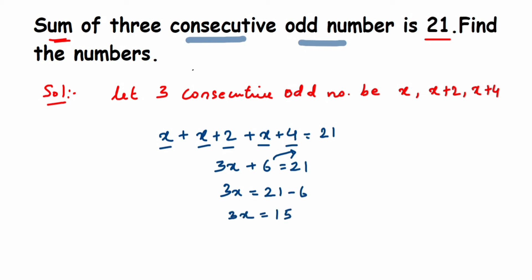This 3 is in multiplication with x, so if you transpose 3 to the other side, it becomes division. X equals 15 upon 3. We can cancel 3 and 15, we'll get the answer 5. So the first odd number will be 5.